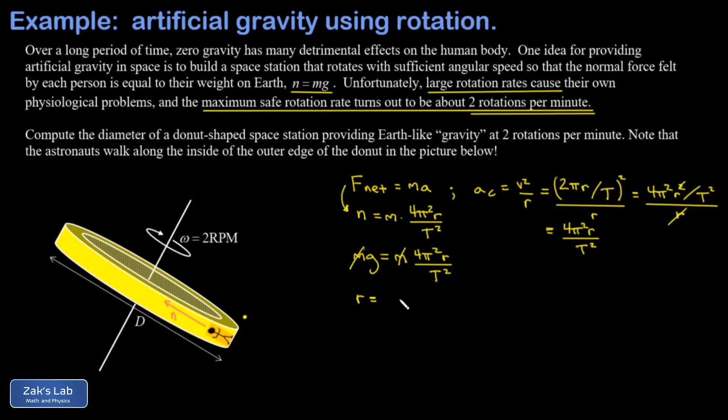We want to solve for the required radius of this donut. I multiply both sides by T squared to get gT², and then divide by 4π².